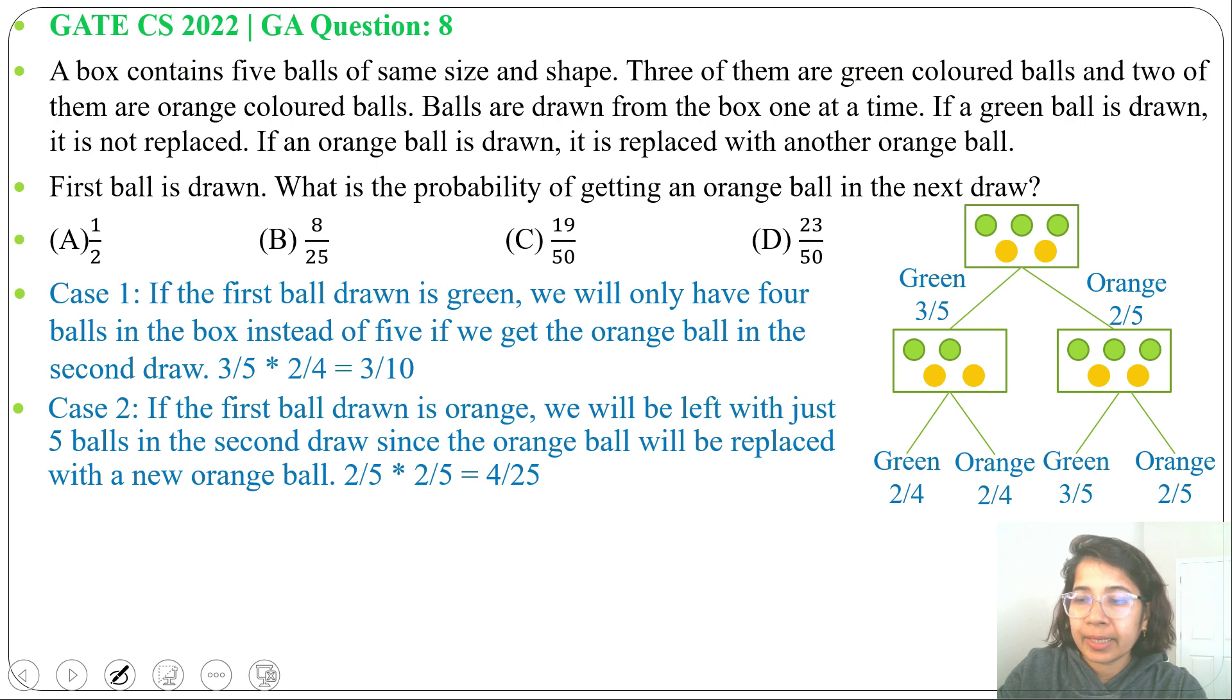Now probability of getting an orange ball in second draw is 2 by 5 multiplication 2 by 5. So 2 divide 5 multiplication 2 divide 5, it's 4 divide 25. 5 multiplication of 5, it's 25.